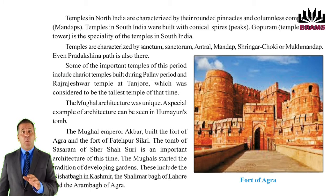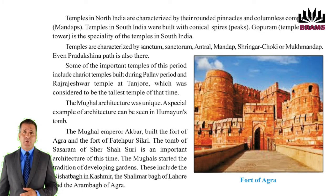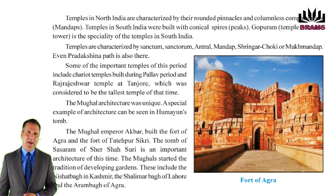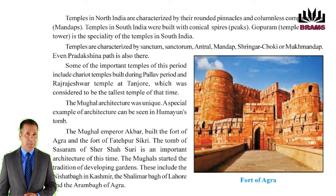The Mughal emperor Akbar built the fort of Agra and the fort of Fatehpur Sikri. The tomb of Sher Shah Suri at Sasaram is an important architecture of this time. The Mughals started the tradition of developing gardens. These include the Nishat Bagh in Kashmir, the Shalimar Bagh of Lahore and the Aram Bagh of Agra.